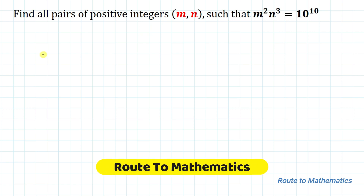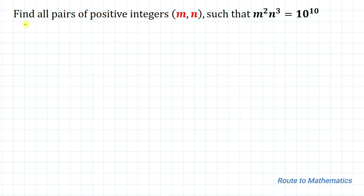Hello everyone, welcome to Root 2 Mathematics. In this video we are going to solve this interesting question: find all pairs of positive integers m, n such that m squared times n cubed equals 10 to the power 10. We are asked to find all positive integers m, n that satisfy the equation m² · n³ = 10¹⁰.